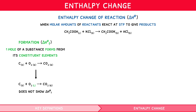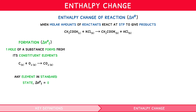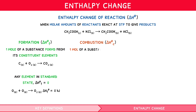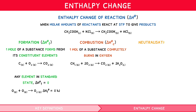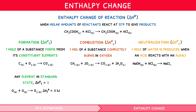Remember that the enthalpy of formation for any element in its standard state is zero — i.e. O(g) + O(g) → O2(g) is zero. Standard enthalpy change of combustion is the enthalpy change when one mole of a substance completely burns in oxygen at STP — for example, CH4 + 2O2 → CO2 + 2H2O. Standard enthalpy change of neutralisation is the enthalpy change when one mole of water is produced when an acid reacts with an alkali at STP — e.g. NaOH + HCl → NaCl + H2O.